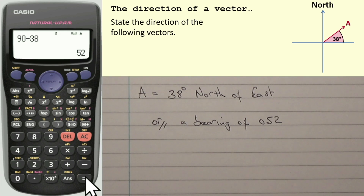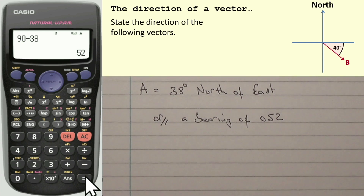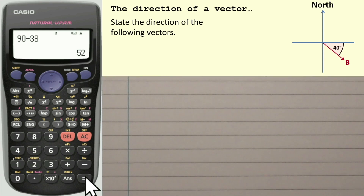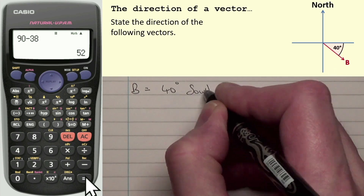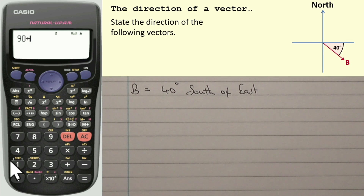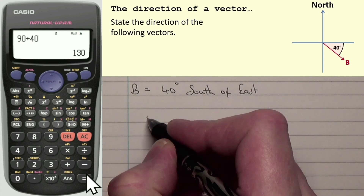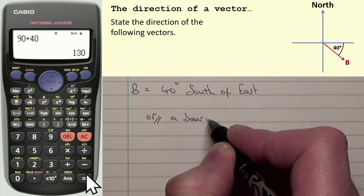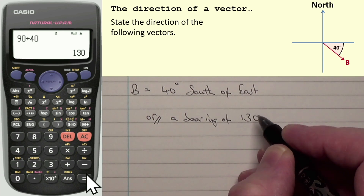Here is vector B. Pause the video now, then get the answer. Vector B: east is here, and from east I'm going towards the south, so that would be 40 degrees south of east. As a bearing, east is 090, but this time it's a greater angle because I'm going clockwise 40 degrees from east. So 90 plus 40 gives a bearing of 130.